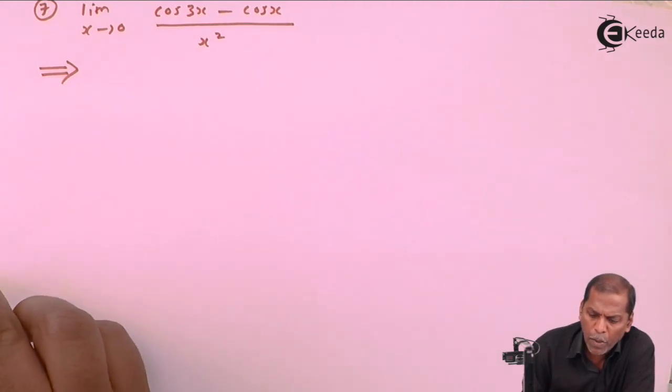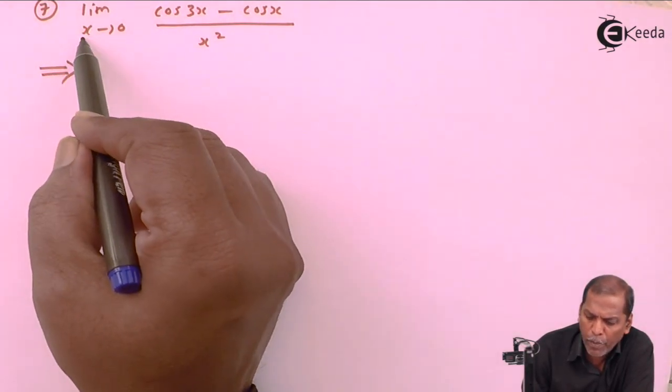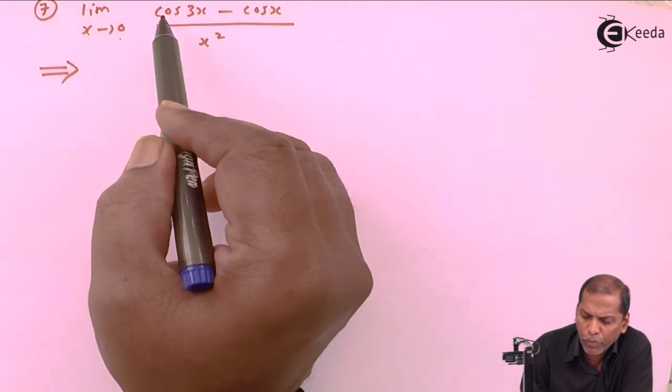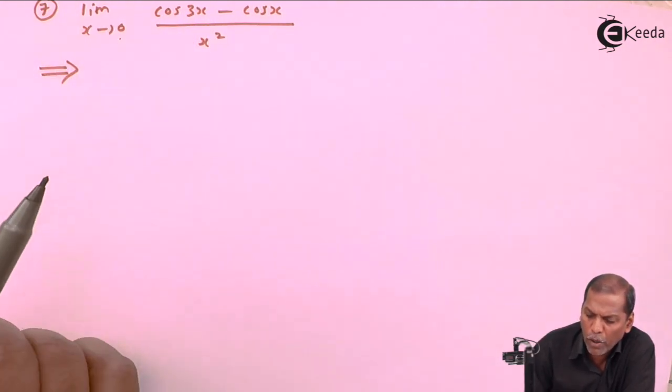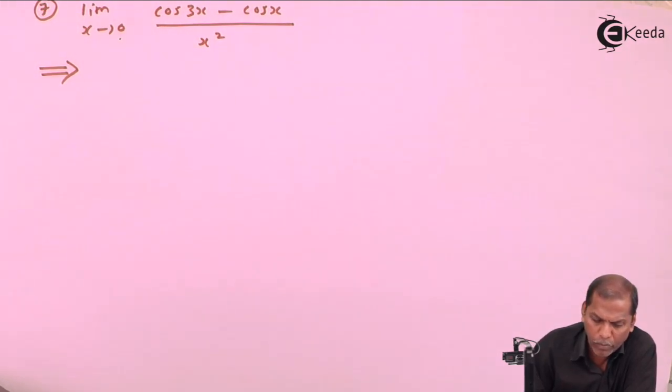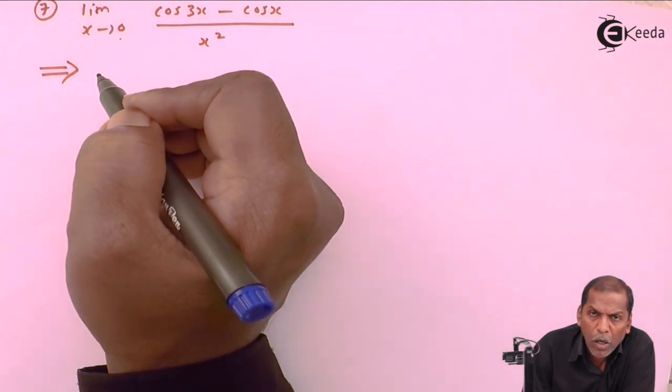The problem number 7 is: limit x tends to 0, cos 3x minus cos x upon x square.